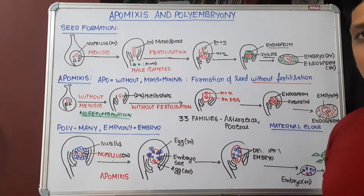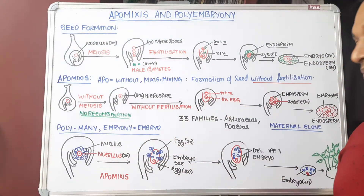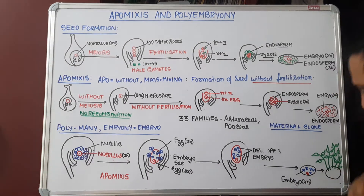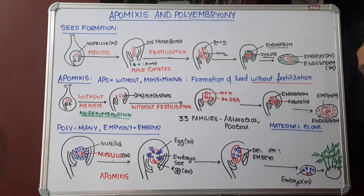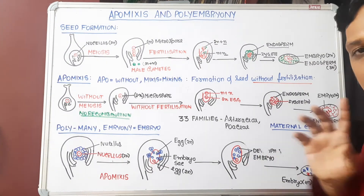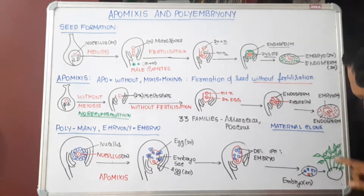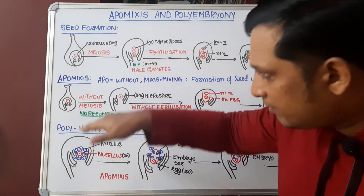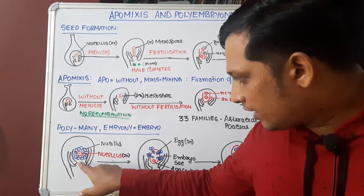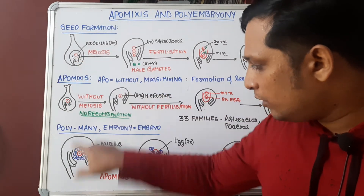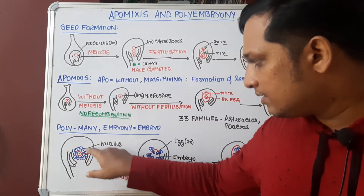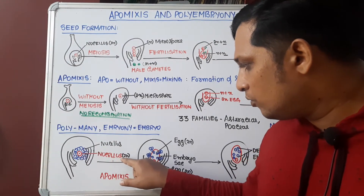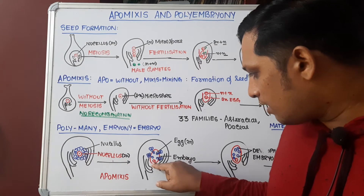Polyembryony — 'poly' means many, 'embryony' means many embryo formation. If you take a seed of citrus or mango and sow it in the soil, instead of giving rise to a single plant — as one seed normally germinates into one plant — you may get four to five mango trees. This is because of polyembryony. Polyembryony is a form of apomixis. The ovule contains a group of similar cells called nucellar cells, all of which are diploid. One of the nucellar cells develops further as a mother cell, dividing to form a female gametophyte or embryo sac containing an egg.